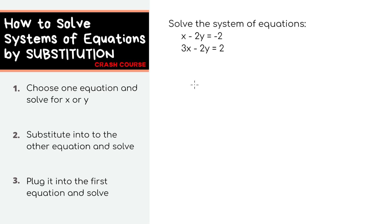In order to solve systems of equations through substitution, you first need to solve for one of the variables. Obviously choose the one that's easiest to solve for. I see here that we can easily solve for x in the first equation because there's no coefficients, no mess. Just add 2y to both sides of the equation and you'll get x equals negative 2 plus 2y.